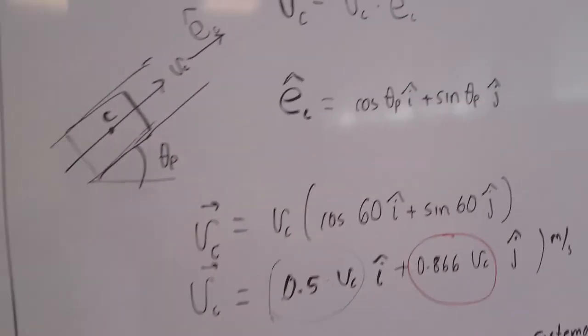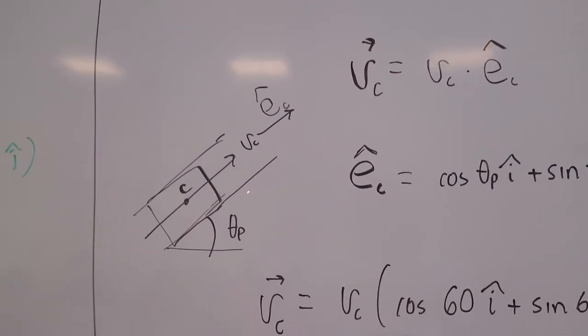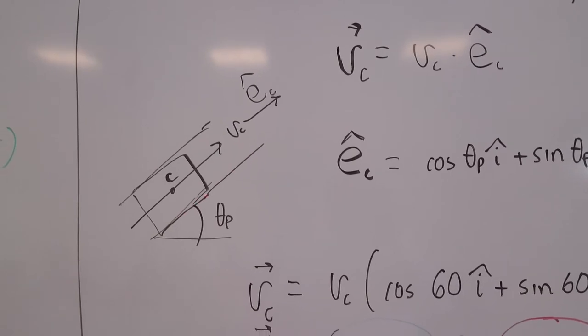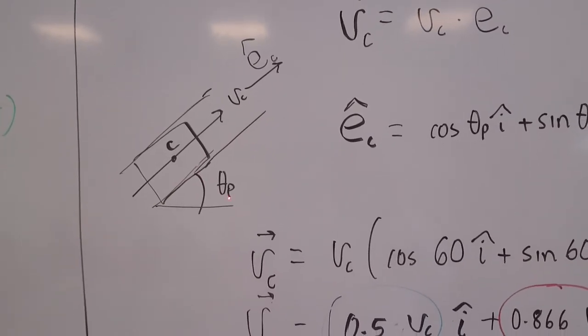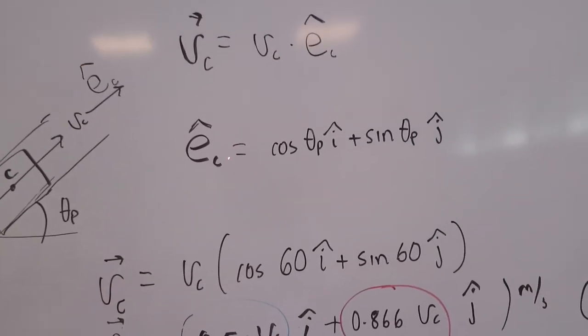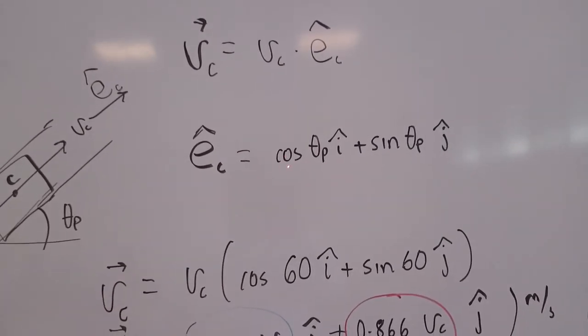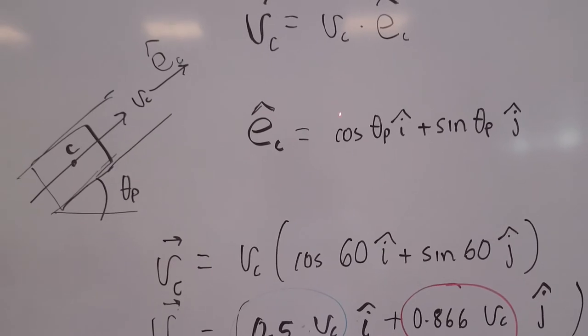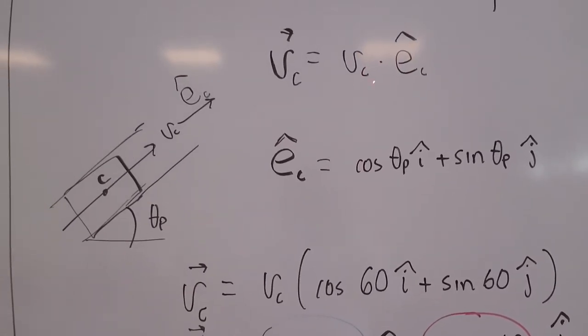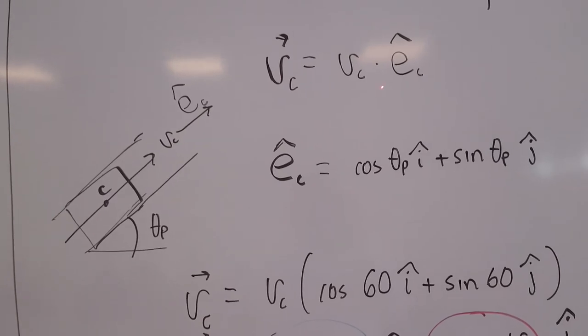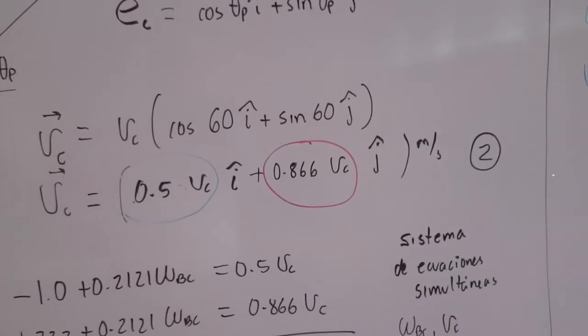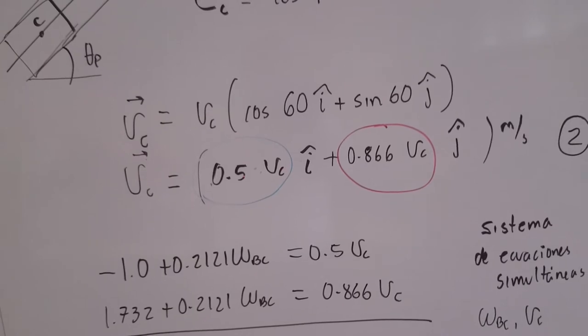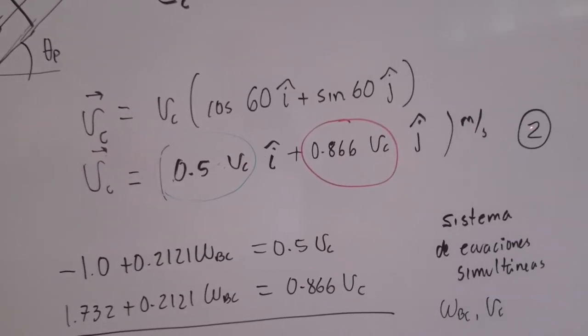So we can also express the velocity of the piston as a magnitude of velocity times the unit vector that defines this inclination or this direction, given by this angle theta P. This unit vector can be expressed in this way: cosine of theta P times i, plus the sine of theta P times j. This, multiplied by the velocity of C, that is a magnitude, gives us the velocity of C in vector form. And this will be our second equation for the velocity of C. By substituting all the data for this problem, we get this equation as the velocity of C, and this is our equation two.